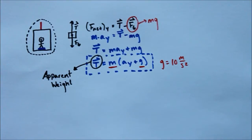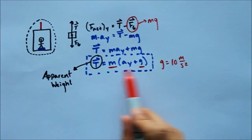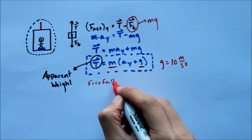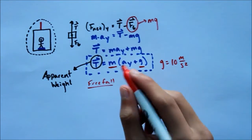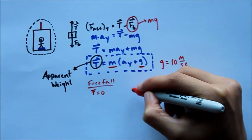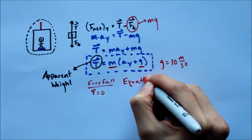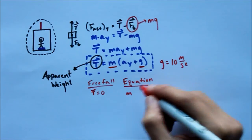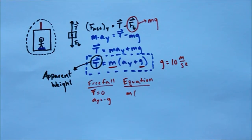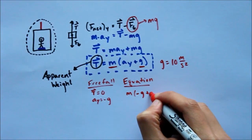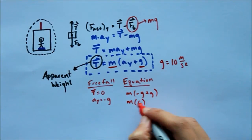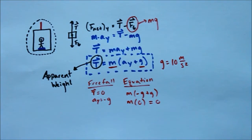I'm going to test this equation to show you it's right. My first scenario is free fall. We all know free fall is weightless, so your apparent weight should equal zero. Using my equation: mass is constant so I'll leave it as m, and in free fall my ay is negative g because you're falling with the acceleration of gravity. So that gives m times (negative g plus g), which equals m times zero, which is zero. It passes the first round of tests.